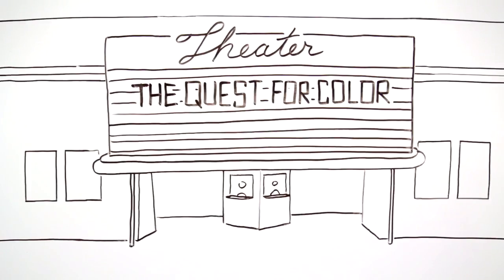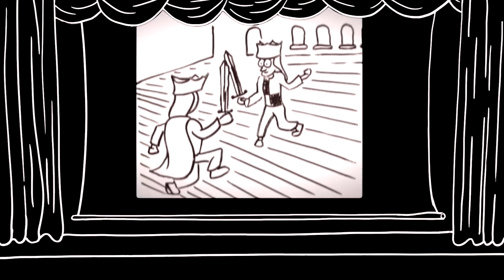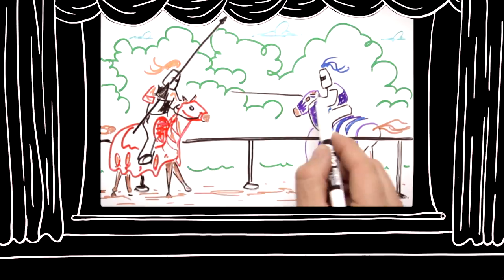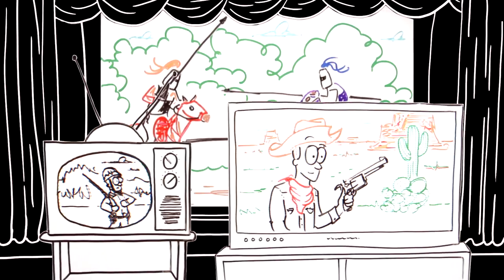The quest for great color has spanned more than a century. It started with black and white silent films before moving to color films, and then eventually to TVs in the home.